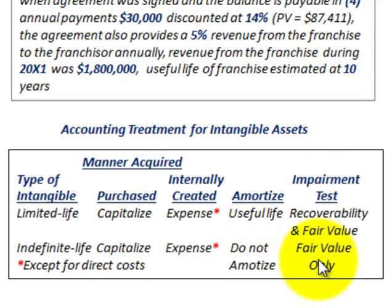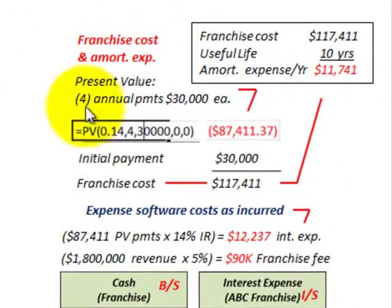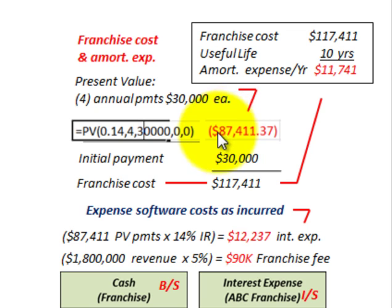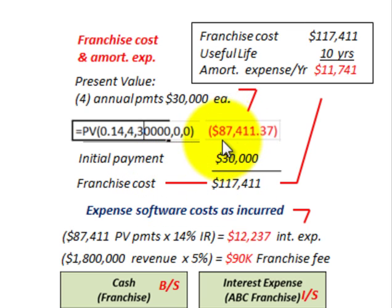There isn't any impairment testing on this intangible. To calculate the franchise cost: we take the present value of the four annual payments of $30,000 each, discounted at 14%, which gives a present value of $87,411. Adding the initial payment of $30,000 gives us a total franchise cost of $117,411.